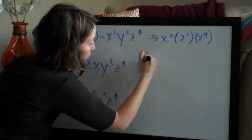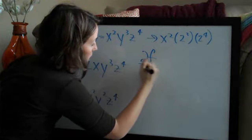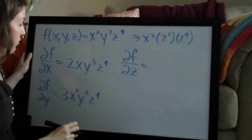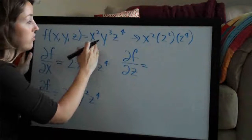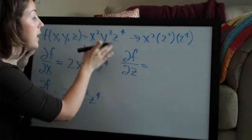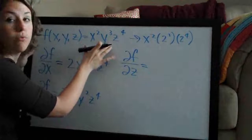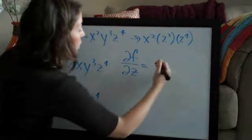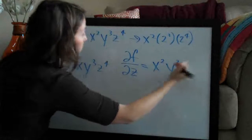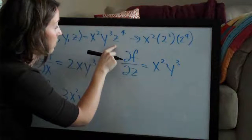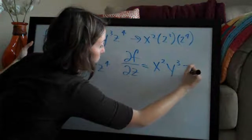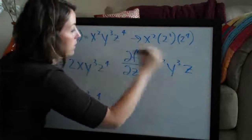So it's going to be the partial derivative of f with respect to z, and we will go ahead and leave x squared and y cubed — we're not touching them because they are like part of the coefficient. They stay. So we'll go ahead and say x squared, y cubed, and then we take the derivative of z.